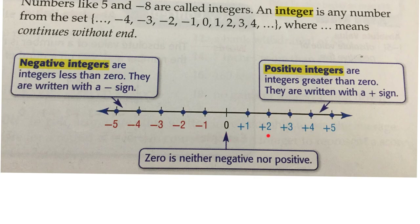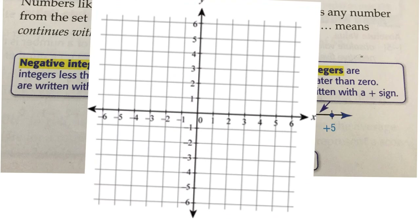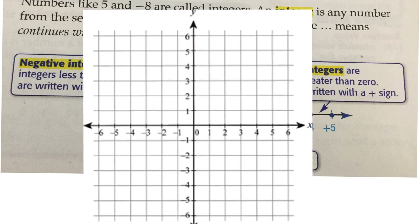Zero is neither positive nor negative. Have you seen this number line with negative numbers before? We sometimes see this when we are graphing on a coordinate plane. Negative numbers on a coordinate plane let you know what direction we are going — similar idea here.